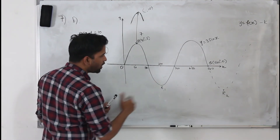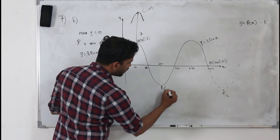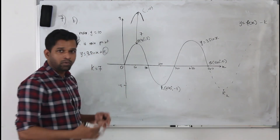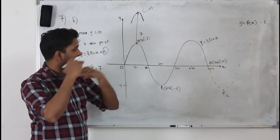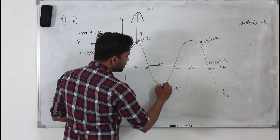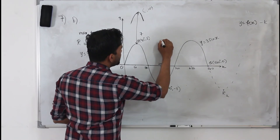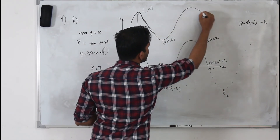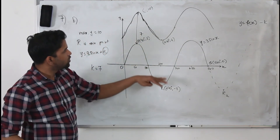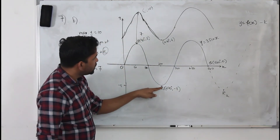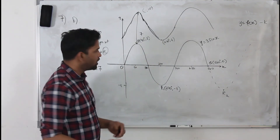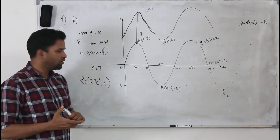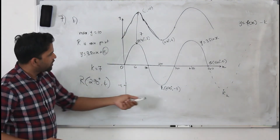Now, talking about the minimum point: on the 3 sine x curve, the minimum point R1 is at 270 degrees comma minus 3. When you move the whole graph upwards 7 units, the minimum point also moves up 7 units. Minus 3 plus 7 equals 4. So the new minimum point R is at 270 degrees comma 4. The coordinates of R are 270 degrees comma 4.